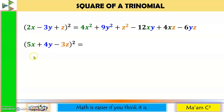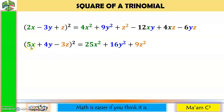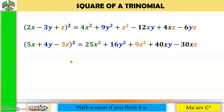Another one: 5x quantity squared is positive 25x squared. Positive 4y quantity squared is positive 16y squared. Negative 3z quantity squared is positive 9z squared. Let's get a pair: 5x times 4y is 20xy, times 2 is plus 40xy. Positive 5x times negative 3z is negative 15xz, times 2 is negative 30xz. Last pair: positive 4y times negative 3z is negative 12yz, times 2 is negative 24yz.